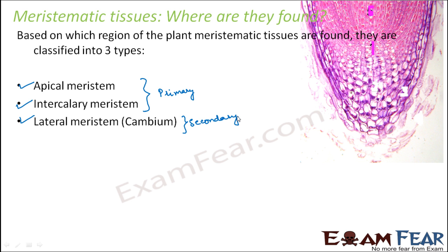You might wonder what is primary meristem and what is secondary meristem. Primary meristem generally appears early in the life of a plant and forms the primary plant body. Secondary meristem occurs in the mature regions and appears in the later life of a plant — that is why the names primary and secondary.